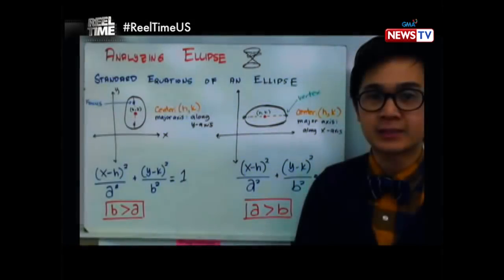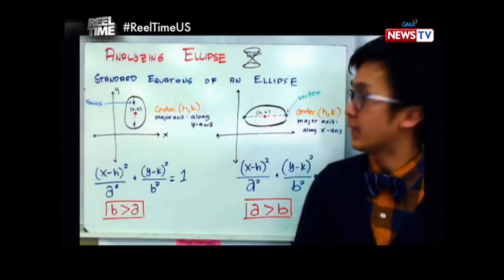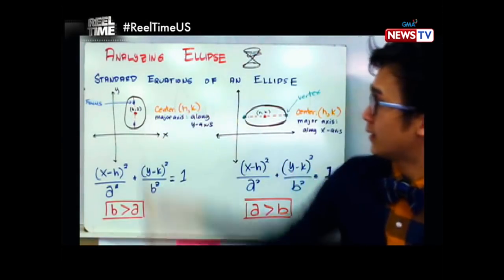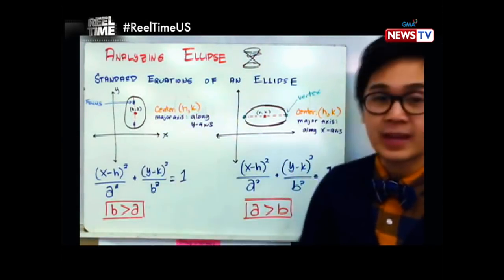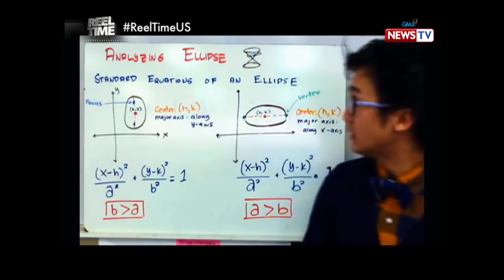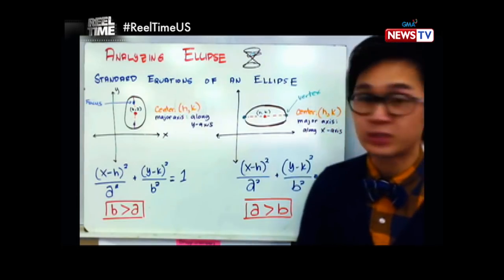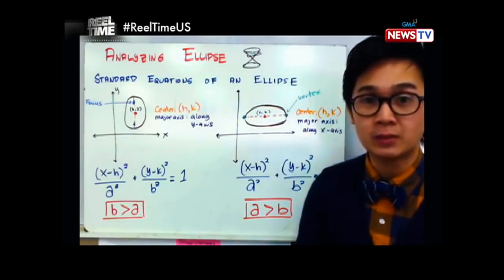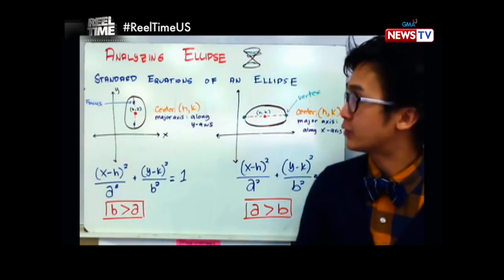Today we're going to be analyzing the ellipse, given a graph and given an equation. Now, the standard equation of the ellipse, just like the parabola, has two sets.